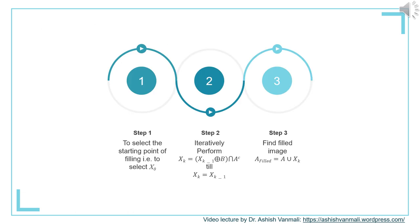There will be three main steps for this algorithm. Step 1 is to select the starting point of filling, that is to select X_0. Step 2 is the iterative step where X_K equals X_{K-1} dilated with B, and we take the intersection with A complement till X_K is the same as X_{K-1}. Finally, the filled image will be calculated as A union X_K.